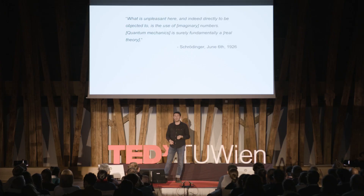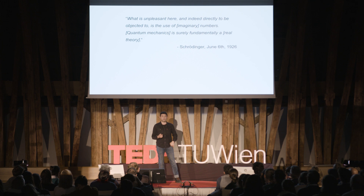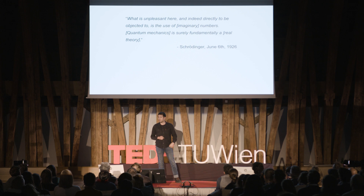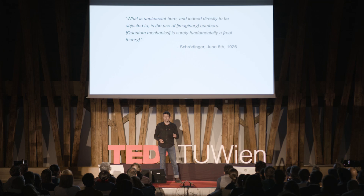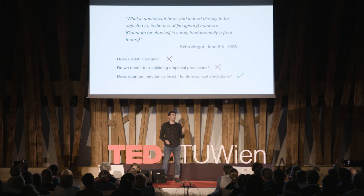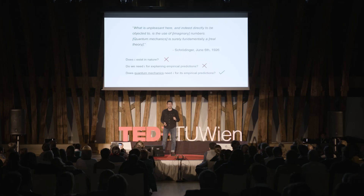But what about quantum mechanics? Physicists have for a long time had the uneasy feeling that the imaginary number is somehow hardwired into quantum mechanics. You can see these worries at play in a letter written by the famous Nobel laureate Erwin Schrödinger to another Nobel laureate, Henrik Lorentz, in the early days of quantum mechanics. Schrödinger writes: 'What is unpleasant here, and indeed directly to be objected to, is the use of imaginary numbers. Quantum mechanics is surely fundamentally a real theory.' It is not a question of whether we need the imaginary number to explain the empirical predictions of quantum mechanics. All the signs in nature that we have access to are things that we see in the lab — the empirical predictions, the predictions for what happens when we do things.